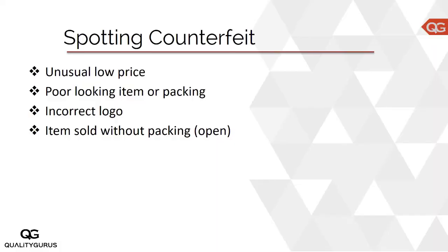How do you spot counterfeit material? There are a few indicators — these are relevant both from an industrial point of view and personally when you go shopping. You should check whether the item is unusually low-priced, has poor-looking packaging, an incorrect logo, or spelling mistakes. Items sold without packaging are also suspicious. These indicators give a good hint that the item may be counterfeit.